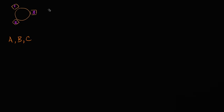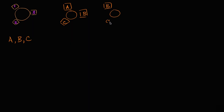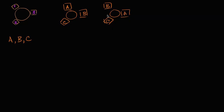For example, if A sits in chair one, B sits in chair three, and C sits in chair two, that is one scenario. Another scenario could be B in seat one, C in seat two, and A in seat three. So my question is: how many scenarios are there like this? I encourage you to pause the video and try to think through it. Now let's work through it together.